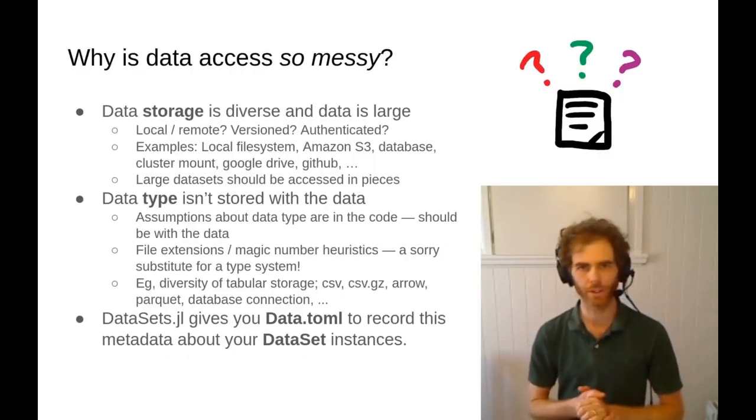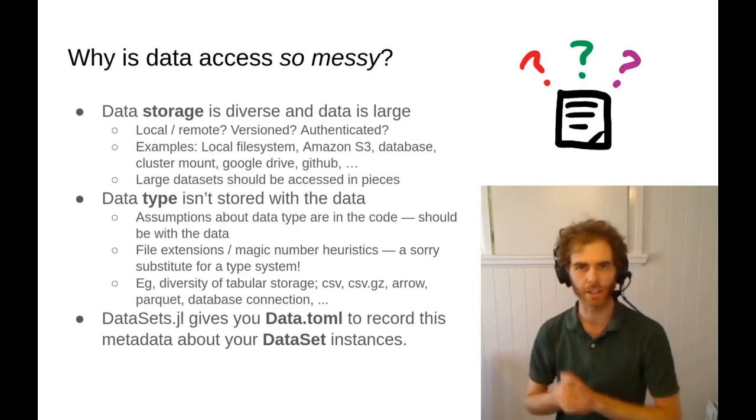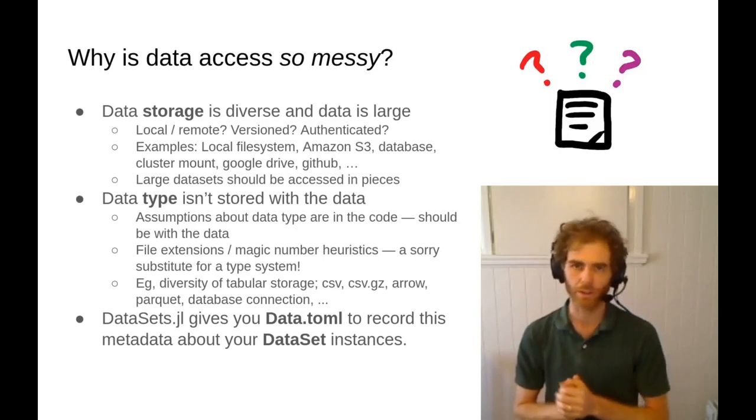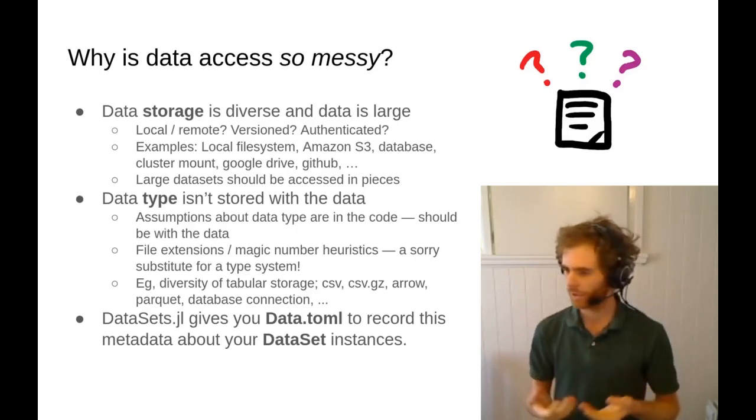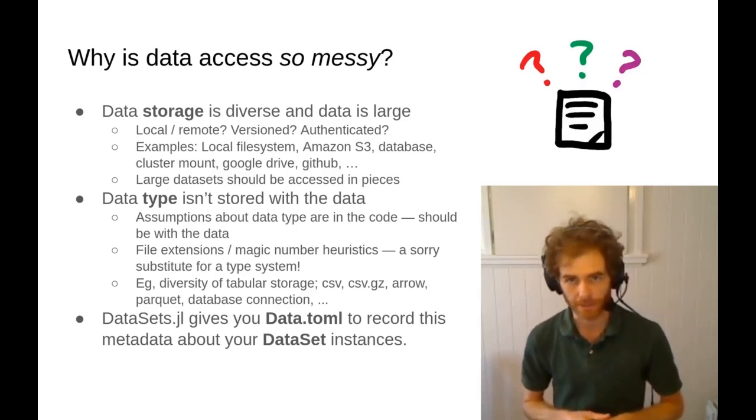A lot of the time in technical computing you have code in a fairly functional style. You put some Julia data structures in, you get some Julia data structures out, and that's all well and good. You probably have the data on your local disk. In development you're not worrying too much about where that data is coming from. And then you go to deploy that into a more production style situation and things kind of get messy.